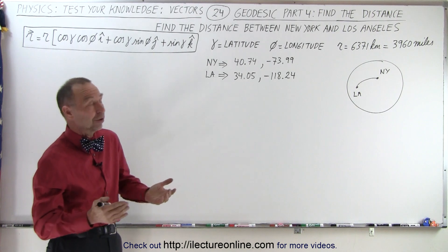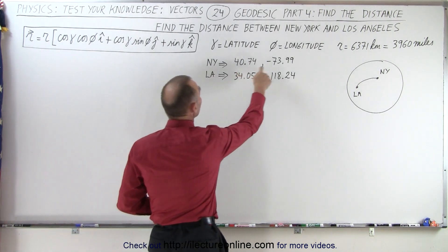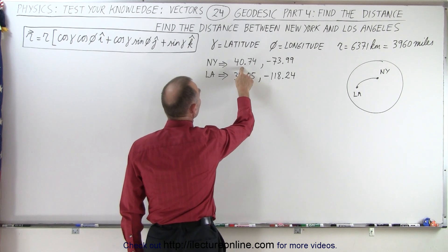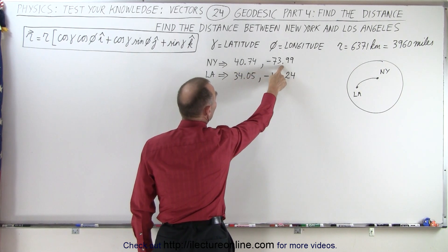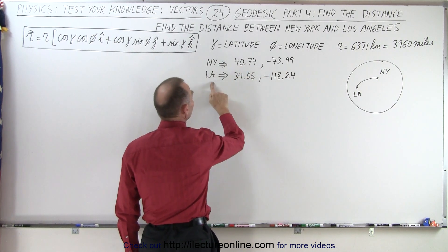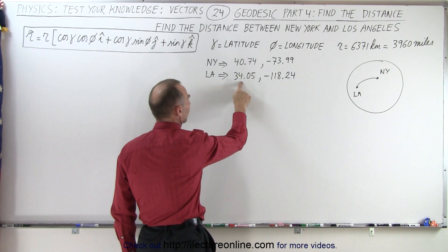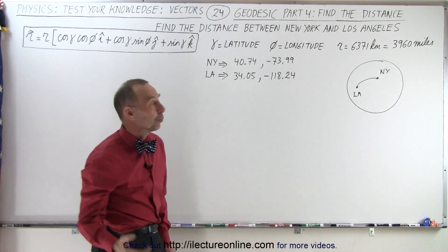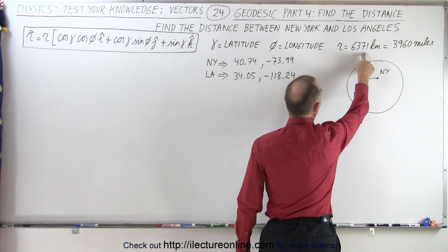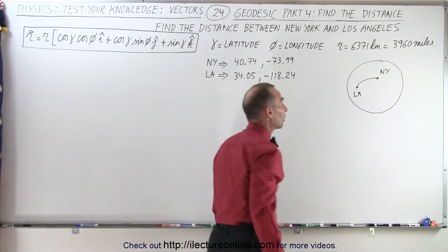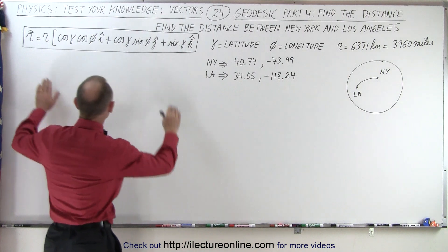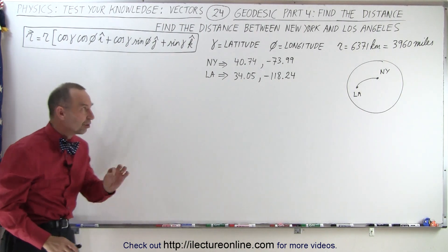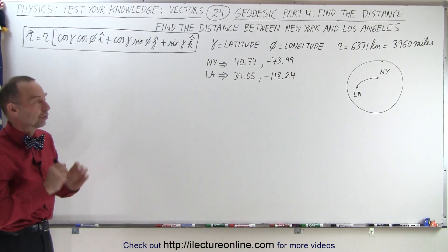What we need to know is the latitude and longitude coordinates. For New York, the latitude is 40.74 and longitude is minus 73.99. For LA it's 34.05 and minus 118.24. The radius of the Earth is 6,371 kilometers, which is 3,960 miles, and this was the equation we got for the position vector for any point on the surface of the Earth.